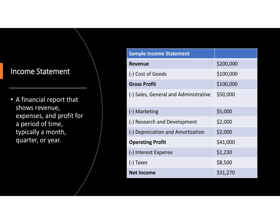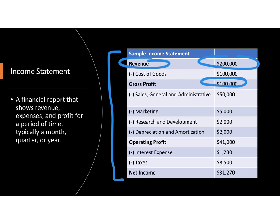What is an income statement? You should have a monthly snapshot of money coming in and going out. For example: revenue of $200,000 for a year, minus cost of goods sold (COGS) of $100,000, gives a gross profit of $100,000. Then subtract all operating expenses — sales, administrative, marketing, research, depreciation — and interest expense on a loan, to arrive at a net income of $31,270. That is an annual income statement.